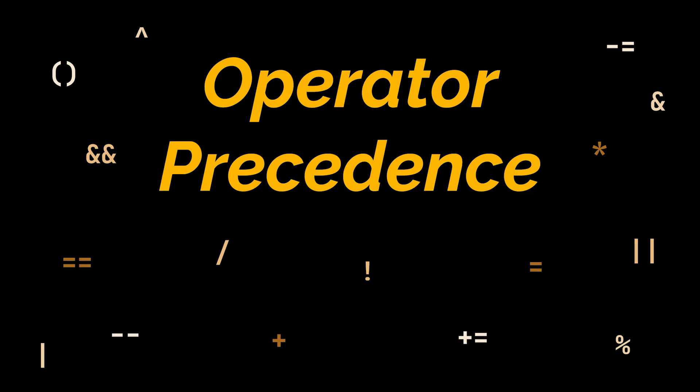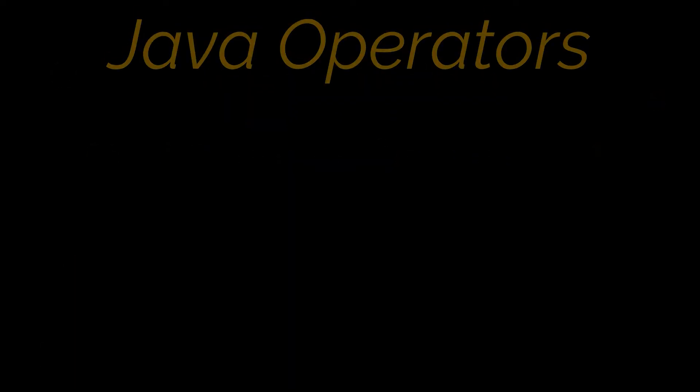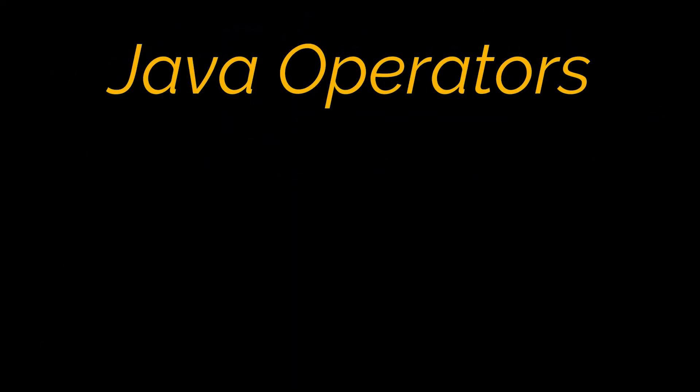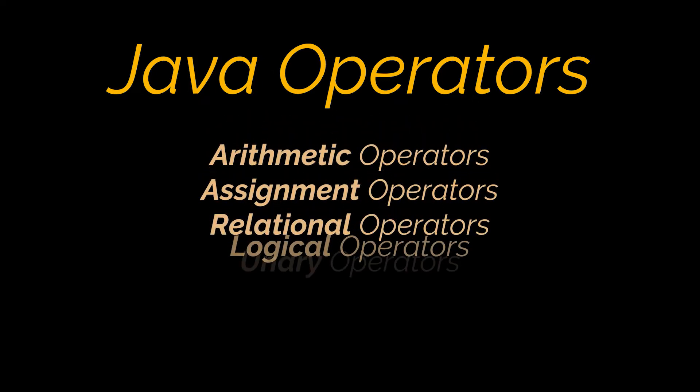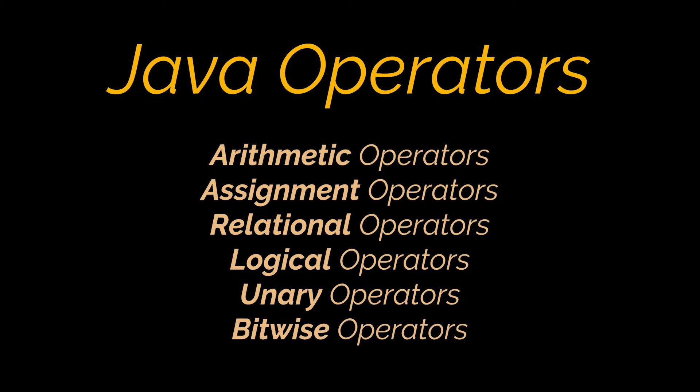Now, before we dive in the topic at hand, let's briefly go over the different types of operators available in Java, their syntax and how to use them. Java operators are divided into six different categories: Arithmetic, Assignment, Relational, Logical, Unary and Bitwise operators.